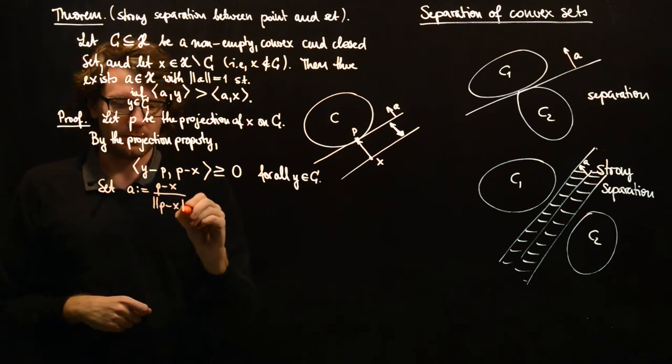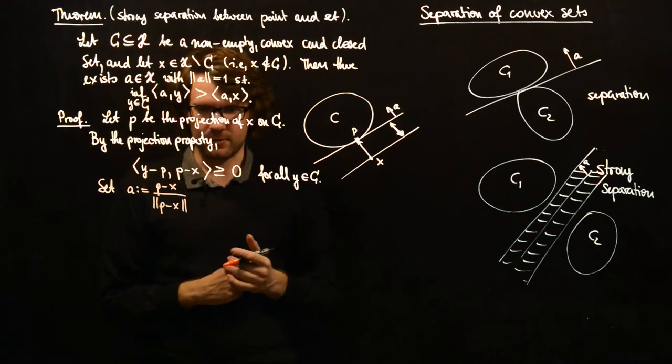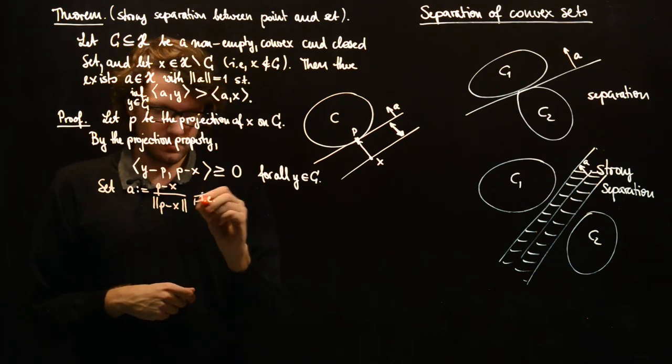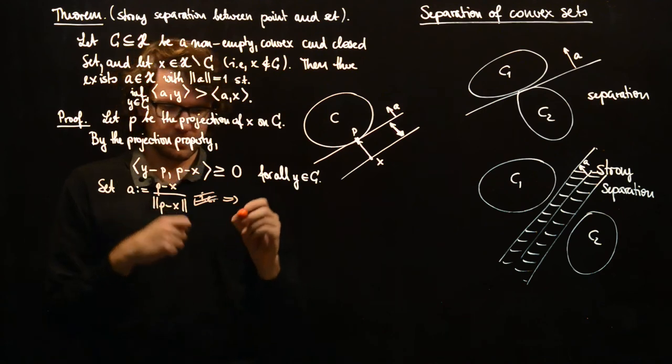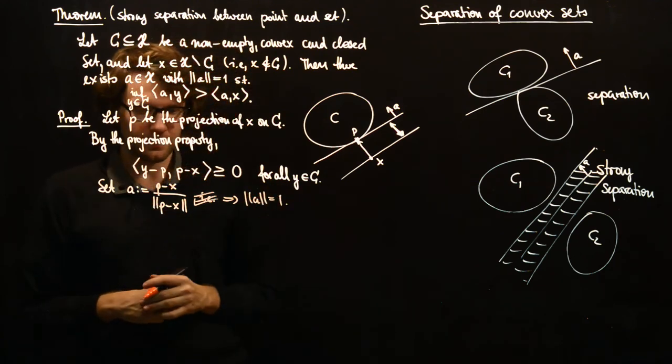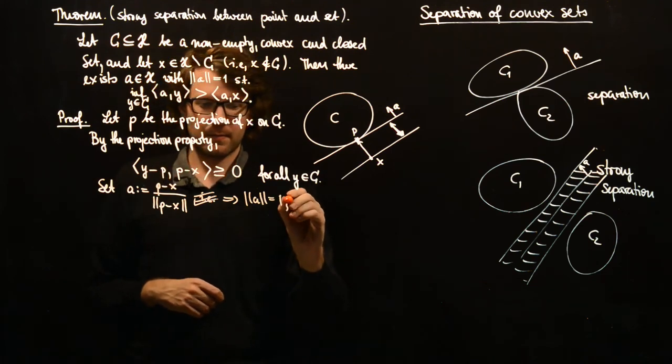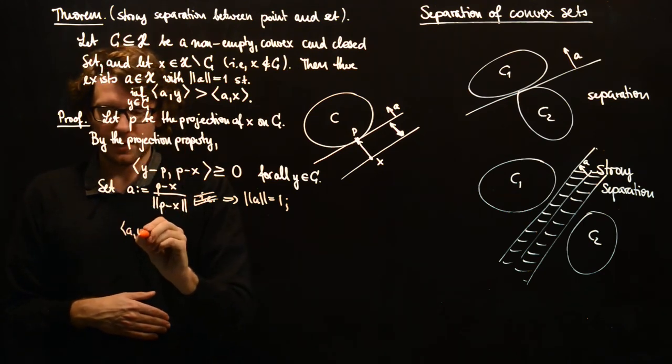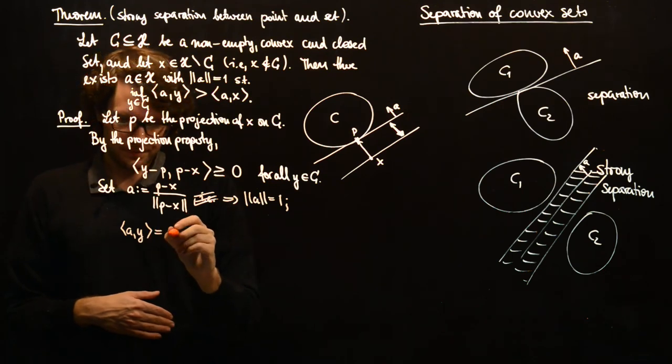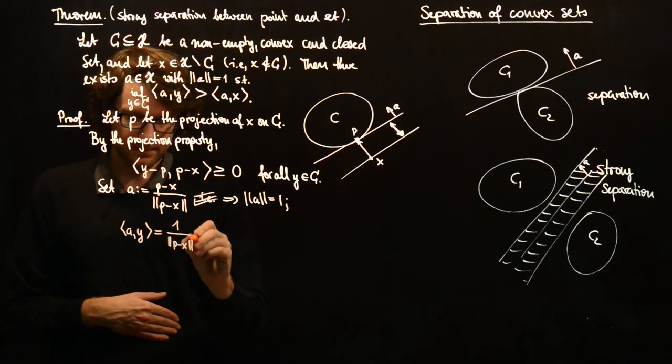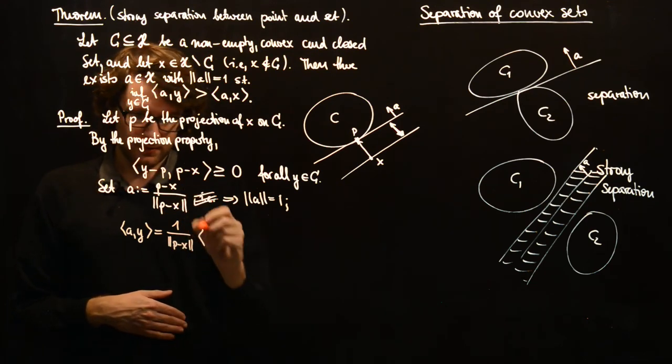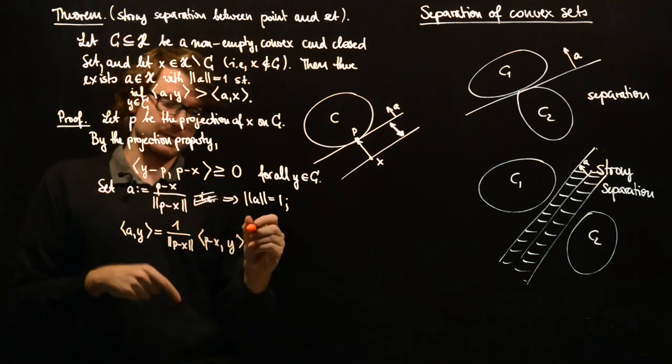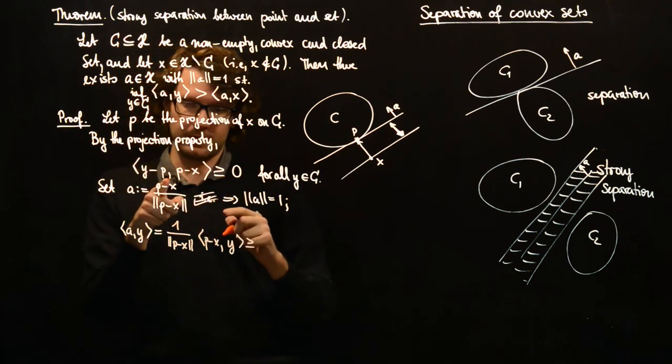And since we want to get norm 1, we divide by the norm of P minus X. This implies that norm of A equals 1. And what do we also have? We have A with Y is 1 over norm of P minus X, inner product of P minus X with Y. And inner product of P minus X with Y is greater or equal than inner product of P minus X with P.